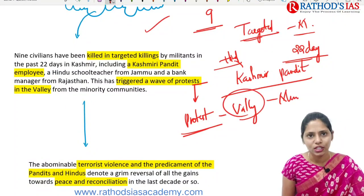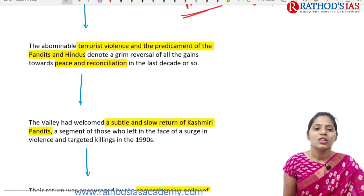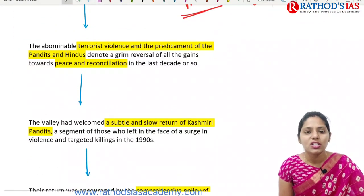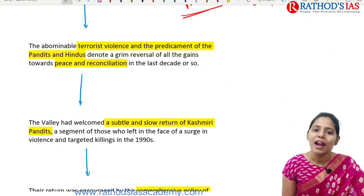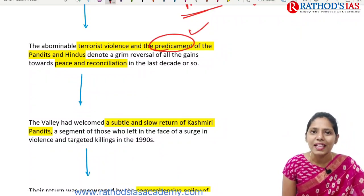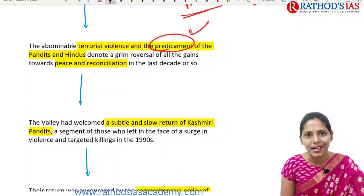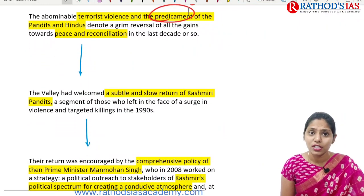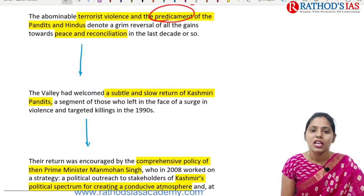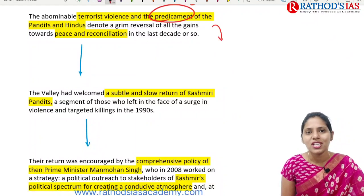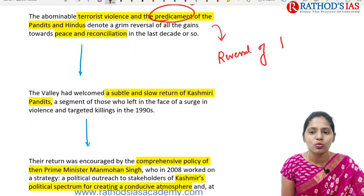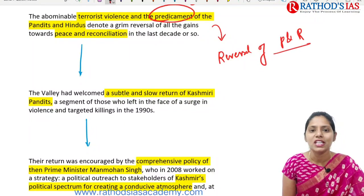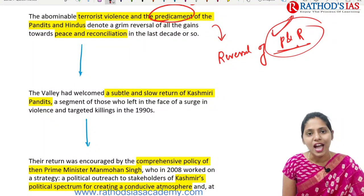These killings triggered a wave of protest, especially from minority Hindu communities in the valley. We are seeing terrorist violence, and the difficulty faced by Pandits and Hindus has led to a reversal of gains towards peace and reconciliation that had been achieved over the last decade in Jammu and Kashmir.